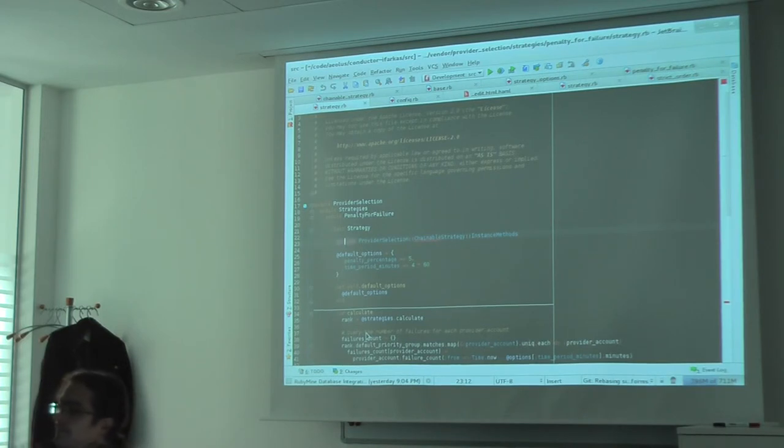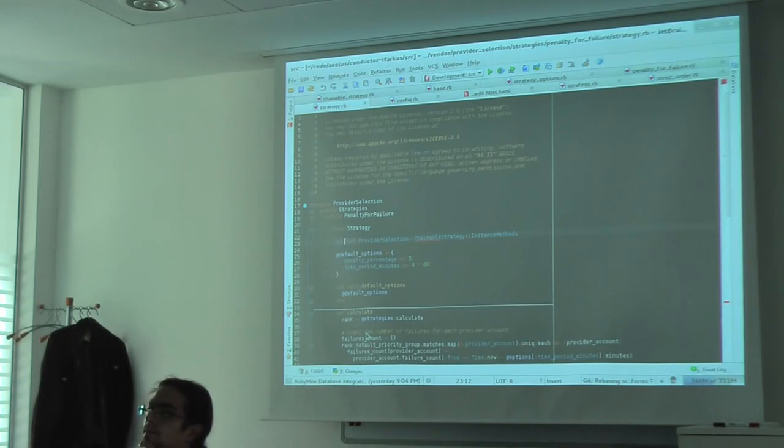But I mean, if you have two accounts of the same type, the random distribution is considering the two accounts as two different matches, even if they are of the same type. So two accounts for EC2 gets twice the probability of the single account.